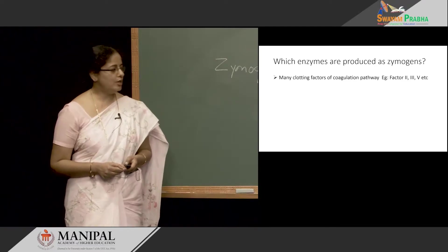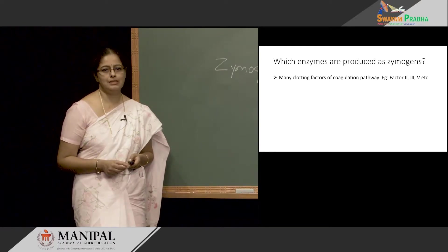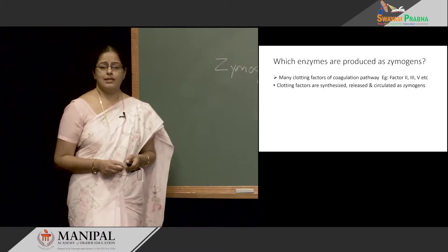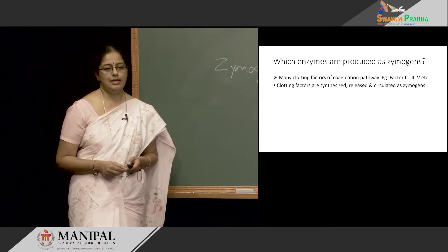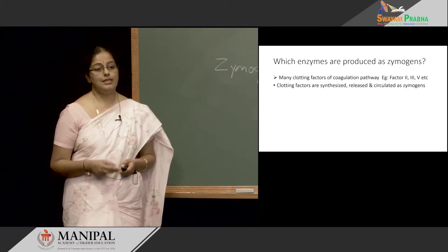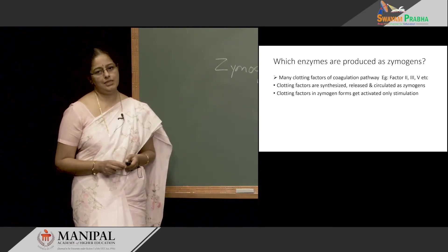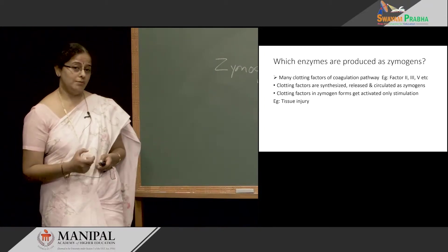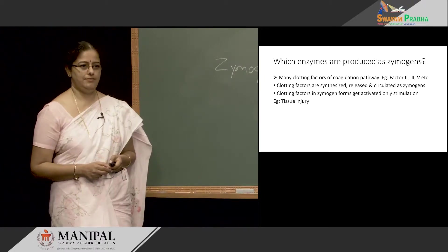We also have several clotting factors of the coagulation pathway which are produced in Zymogen forms. There are a few examples: factor 2, factor 3, factor 5, et cetera. These clotting factors are synthesized at different sites, released into the blood, and circulate in the blood as Zymogens. They get activated only when there is stimulation — for example, if there is tissue injury and we want the blood to clot so that there is no blood loss, at that time these Zymogens get activated.